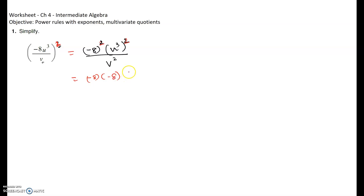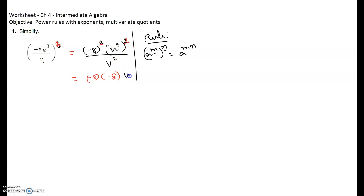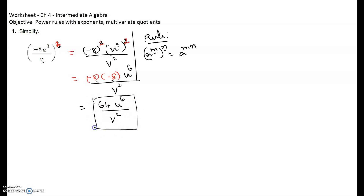Negative eight times negative eight is positive 64. Then we use the power rule of exponents: if you have a to the power m, raised to the n, that equals a to the m times n. So u to the exponent 3, squared, gives u to the exponent 3 times 2, which is u to the 6. Divided by v squared, the result is 64u⁶ over v².